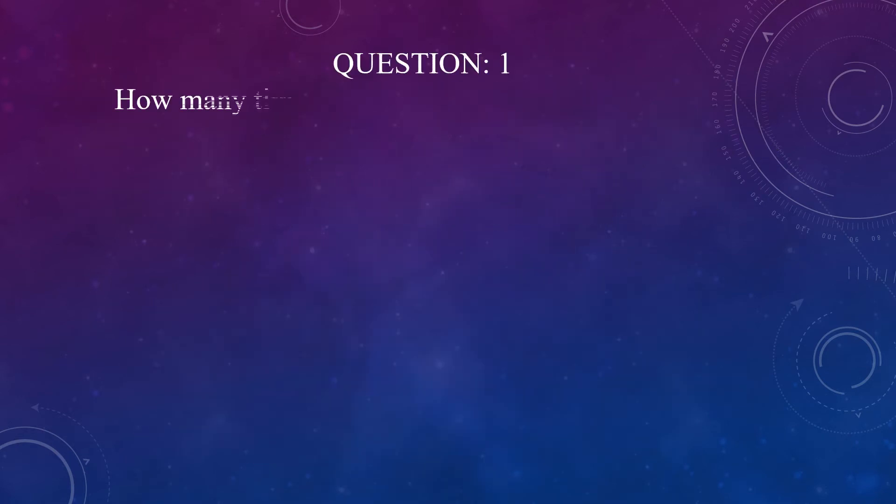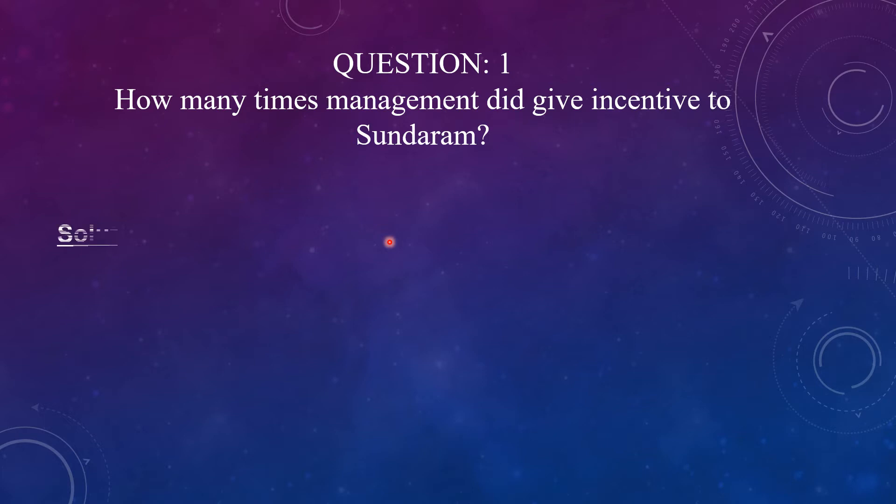Let's move ahead to the question number 1. How many times the management did give incentive or salary increment to Sundaram? So, in order to find that we should be able to split the final salary that is 360 zeds into some factors. And those factors will be nothing but the prime numbers because the salary always increased in prime numbers only.